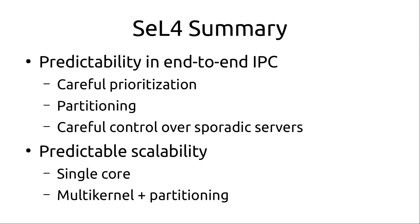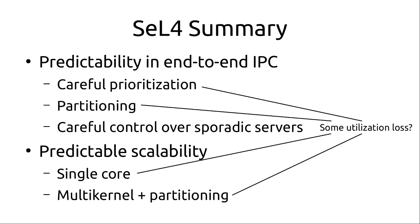seL4 is a fantastic system that provides a lot of functional guarantees, but it requires very careful design in terms of its end-to-end IPC to get predictability. You have to carefully prioritize, partition to avoid wait-queue interference, and carefully control sporadic servers to avoid complexity within the kernel and around preemptions. For predictability, you either have to run on a single core or use some other strategy, and all these things have some utilization loss that, as far as I know, has not been studied in depth. Thank you very much.